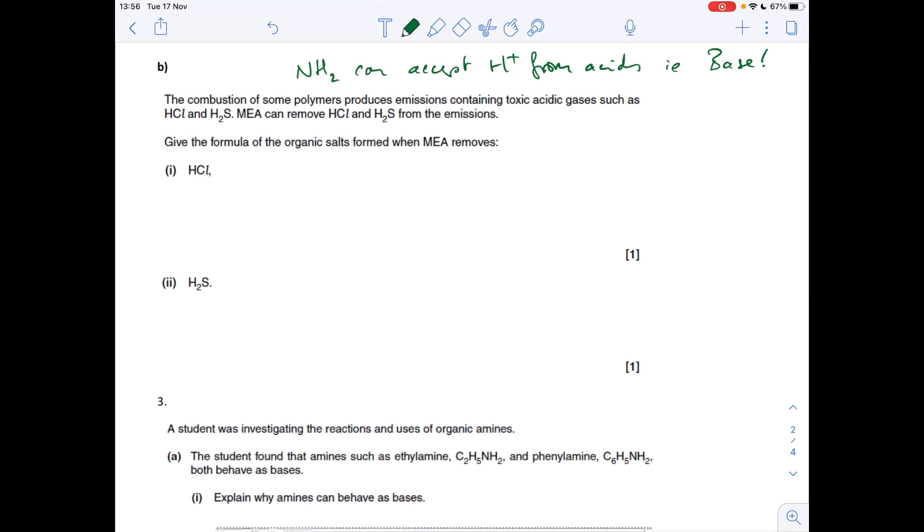Next part of the question is basically checking that we know that the NH2 group in amines is a base, so in other words, it can accept H plus ions from acids. So the first structure would look like this, so the nitrogen from the NH2 group in MEA has accepted the H plus from the HCl, and obviously the Cl minus ions left over, so you just draw them side by side like that.